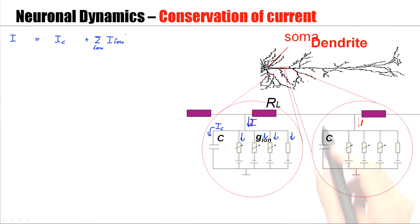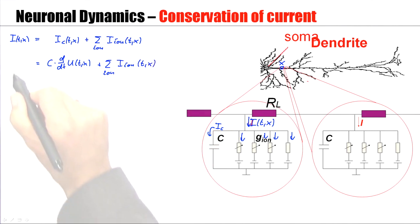Now this is just the current at one segment. This segment here is my segment at location x. So this would be the current at time t at location x. So I of t and x has a capacitive current at location x and all these ionic currents specific for this location x. We know from previous lectures that the capacitive current can be written as C, the capacitance, times d dt of the voltage u of t and x. So this would be the total current at this segment at location x.